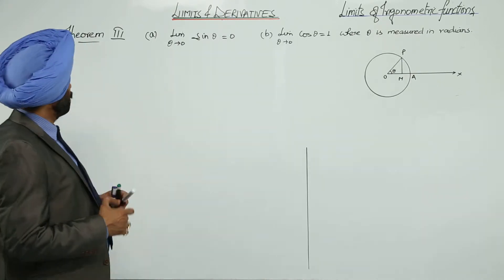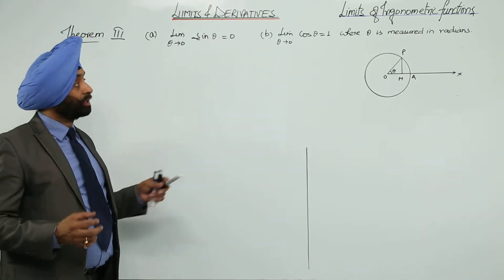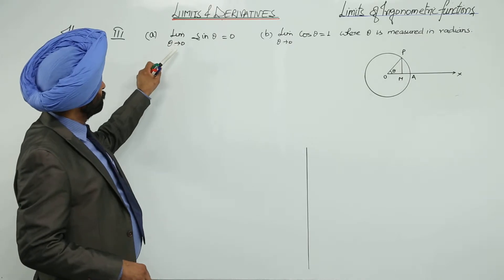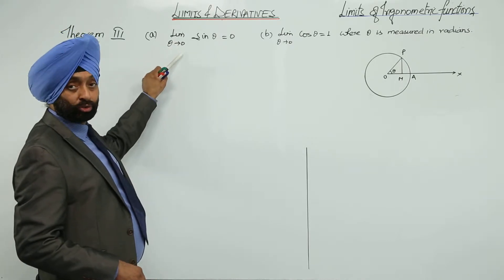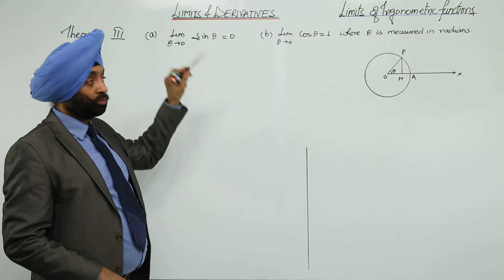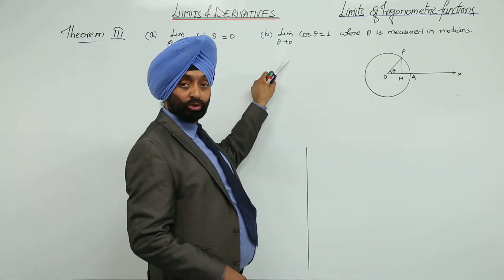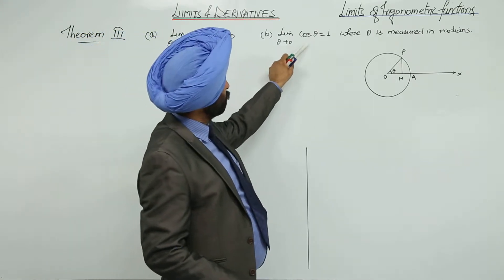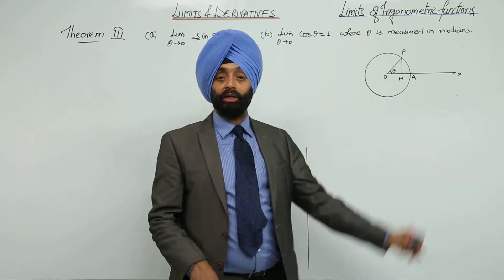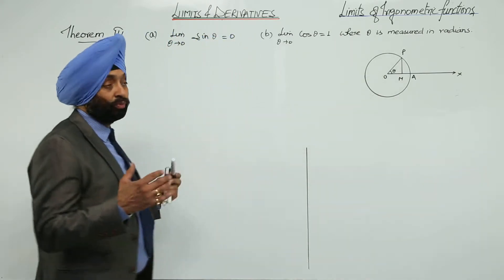Theorem 3. A formula states: limit theta approaches 0, sin theta equals 0, and limit theta approaches 0, cos theta equals 1, where theta is measured in radians. Let's prove it.